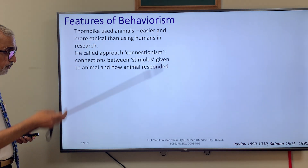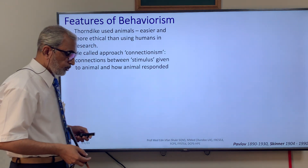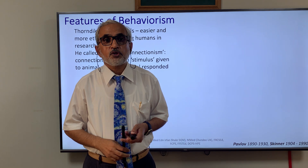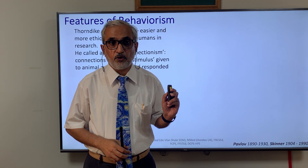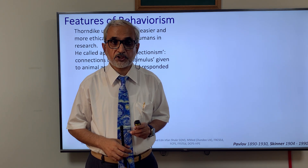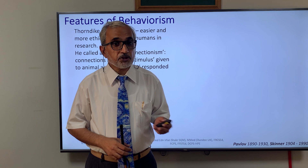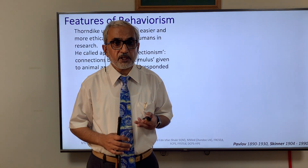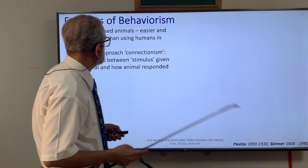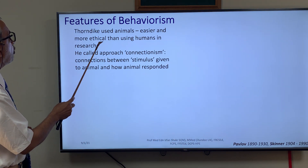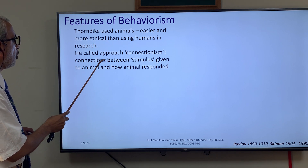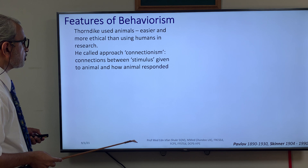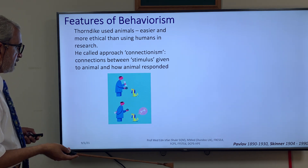Initially, when developing educational theories, people did not know much about the brain and the mind, so all experimentations of learning were done on animals. Later, data was collected and experiments were done on small children. Researchers thought animals were easier and more ethical to use. One approach was called connectionism — the connection between a stimulus given to an animal and how the animal responds.